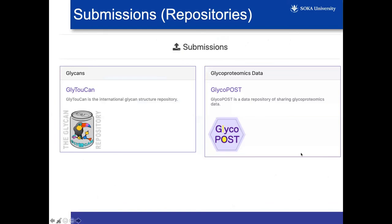In the submission section, there's Glytucan, which I'll talk about later, and also Glycopost, which Frederic also mentioned — a repository for mass spec data for both glycomics and glycoproteomics. We're working with UniCarb-DR and UniCarb-DB to link and annotate the spectra deposited in Glycopost. Glycopost only takes the raw mass spec data; the annotations are stored as files directly, but they can be parsed in UniCarb-DR and linked with Glytucan to eventually be curated in UniCarb-DB.